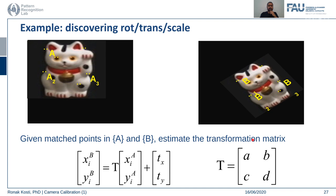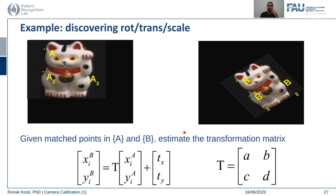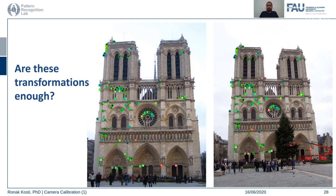Similarly, for solving any generic transformation — whether rotation, translation, or scaling — we estimate the transformation matrix T in the same computational manner discussed. The question arises: if we can solve this estimation problem and minimize the objective function, why is there still research going on?